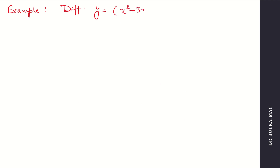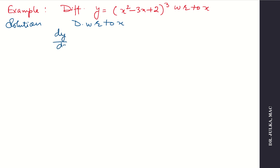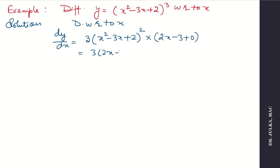When we differentiate any composite function, we first differentiate the power, then the function, then the angle. Example: differentiate y equals (x square minus 3x plus 2) whole to the power 3. Here power is 3 and the function is (x square minus 3x plus 2). Derivative with respect to x equals 3 times (x square minus 3x plus 2) whole to the power 2, multiplied by derivative of the function which is (2x minus 3). The answer is 3 times (2x minus 3) times (x square minus 3x plus 2) to the power 2.